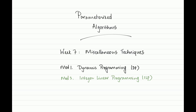Welcome back to the second module of the seventh week in parameterized algorithms. This time I want to focus on using integer linear programming as a versatile tool for coming up with FPT algorithms for various problems. You've met ILP conceptually before — you've certainly written LP formulations for problems like vertex cover and used them for kernelization. We've even used LP optimal values as an inspiration for an above-guarantee parameterization for vertex cover.